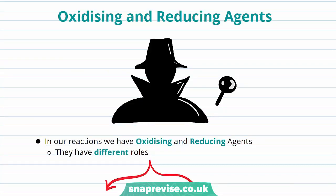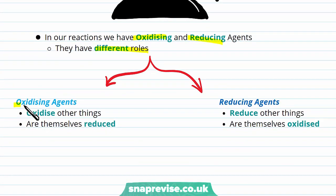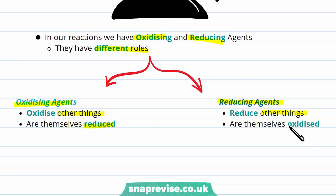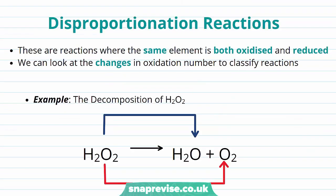Oxidizing and reducing agents are important in these reactions. Oxidizing agents oxidize other things and are themselves reduced, whereas reducing agents reduce other things and are themselves oxidized.